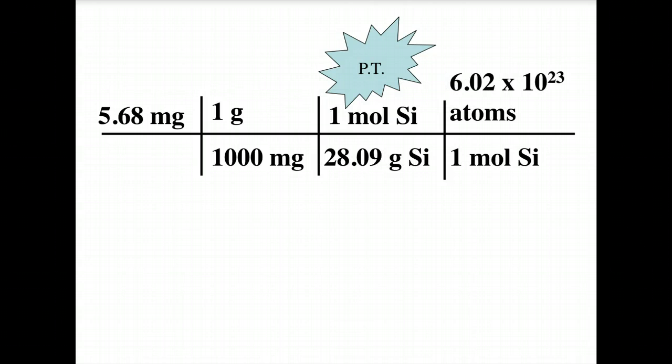So, one mole has 6.02 times 10 to the 23rd in it, atoms. Okay. So, I've set this up. We've gone from milligrams to grams, grams to moles, and moles to atoms.